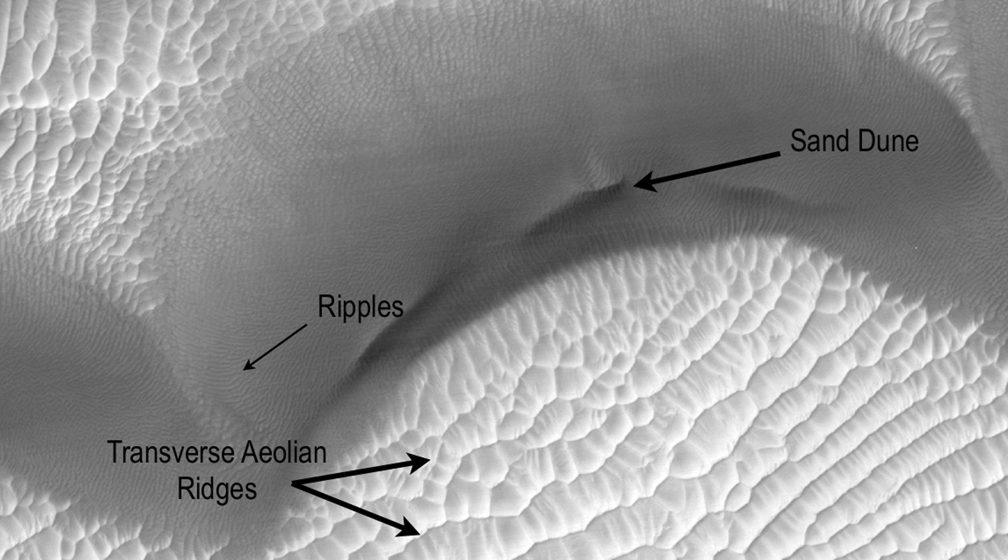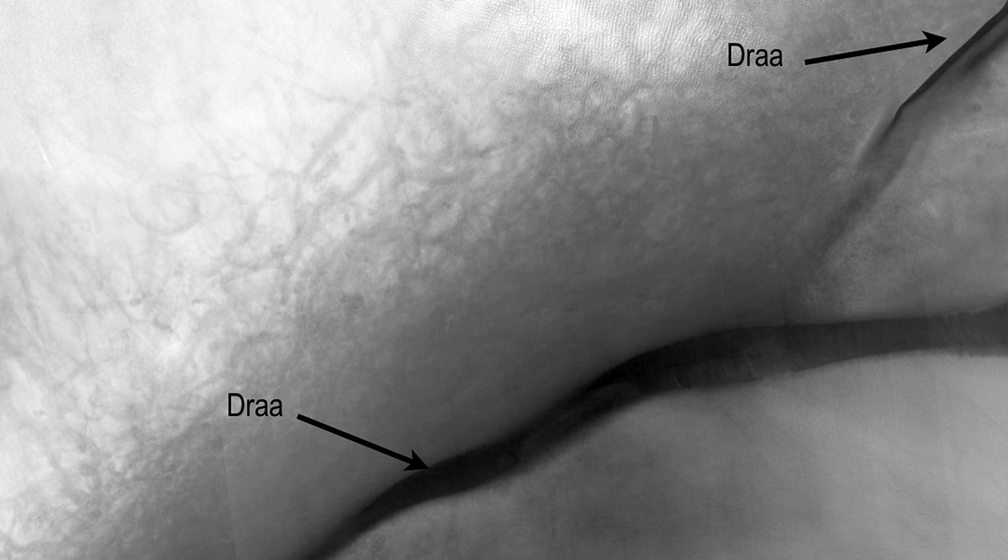TARs are slightly larger bedforms, with wavelengths approximately 20 to 70 meters, and are often light in tone relative to their surroundings. Dark-toned dunes with wavelengths from 100 meters to 1 kilometer are a common landform, and many are active today. What geologists call Dra is the highest-order bedform with largest wavelengths, greater than 1 kilometer, and is relatively uncommon on Mars.